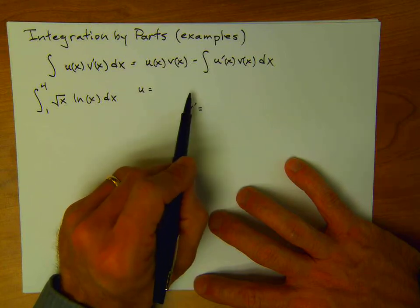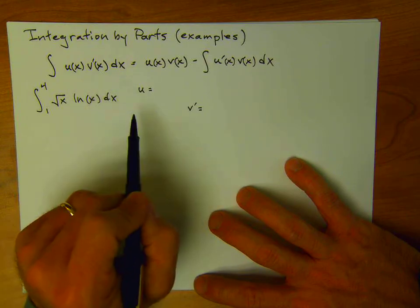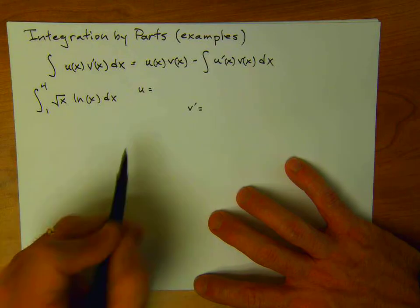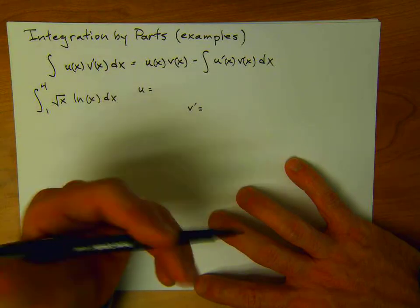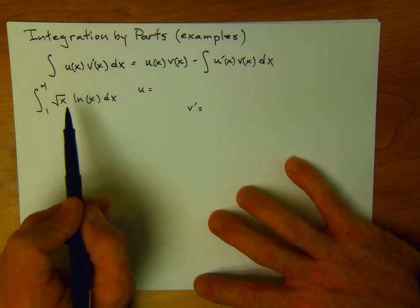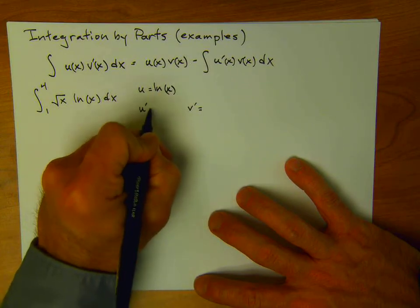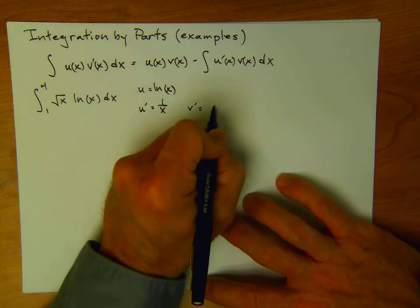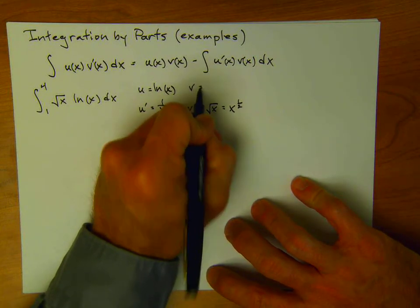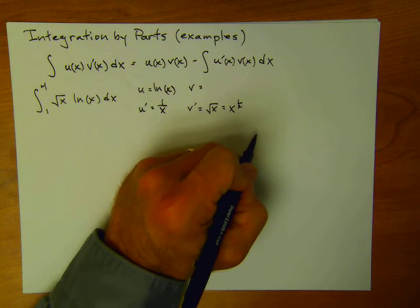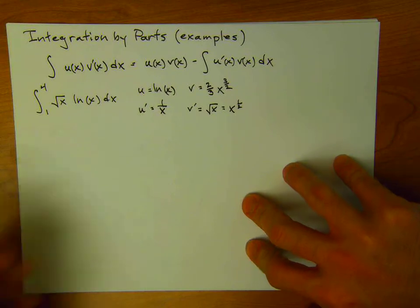We could let u be square root of x, but that would leave v prime to be natural log. We don't really know the antiderivative of natural log. So let's let u equal natural log of x, because u prime is something we know — that's just 1 over x. And we'll let v prime equal square root of x, which is x to the 1/2. That's the power rule in reverse: add 1 to the exponent to get 3/2, divide by the new exponent, giving us 2/3 x to the 3/2.